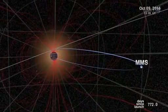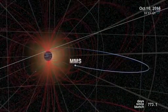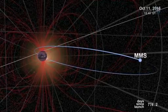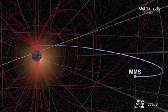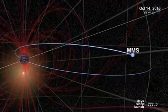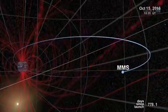Just one problem: finding them. Magnetic portals are invisible, unstable, and elusive. They open and close without warning. And there are no signposts to guide us in, notes Scudder.